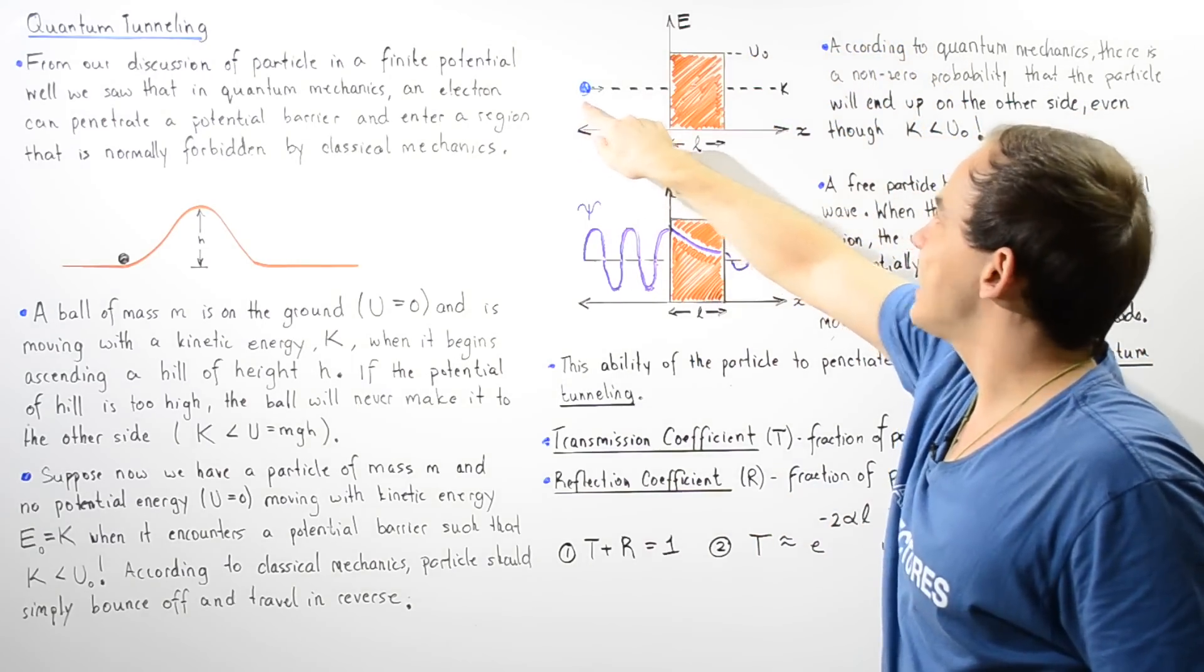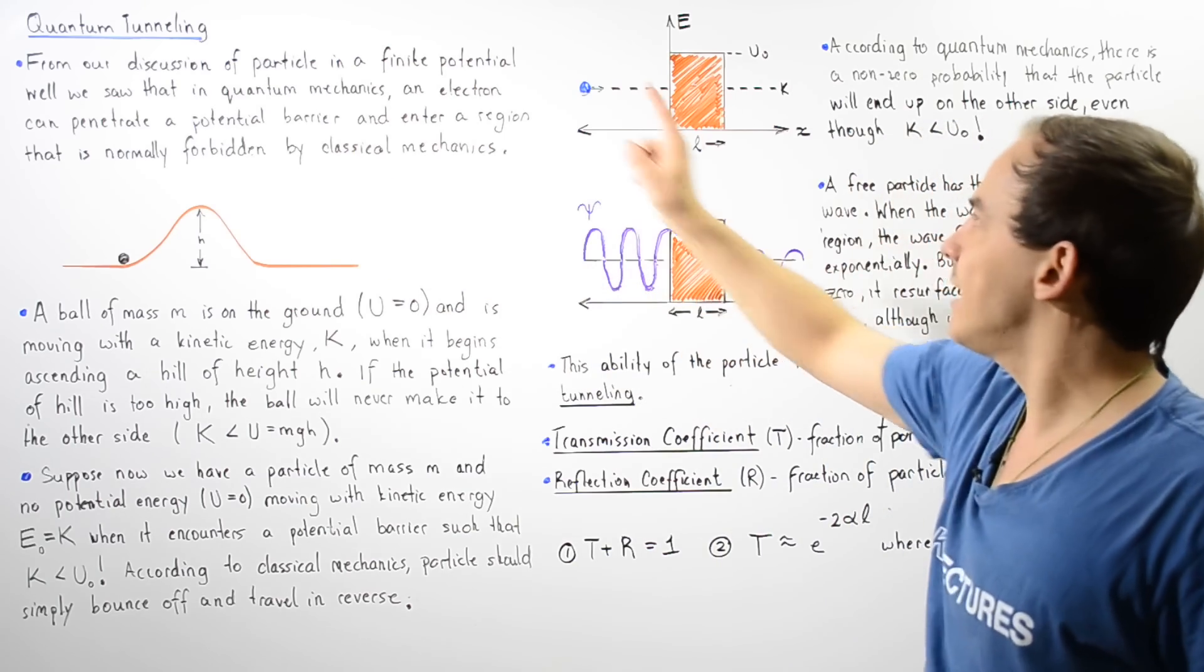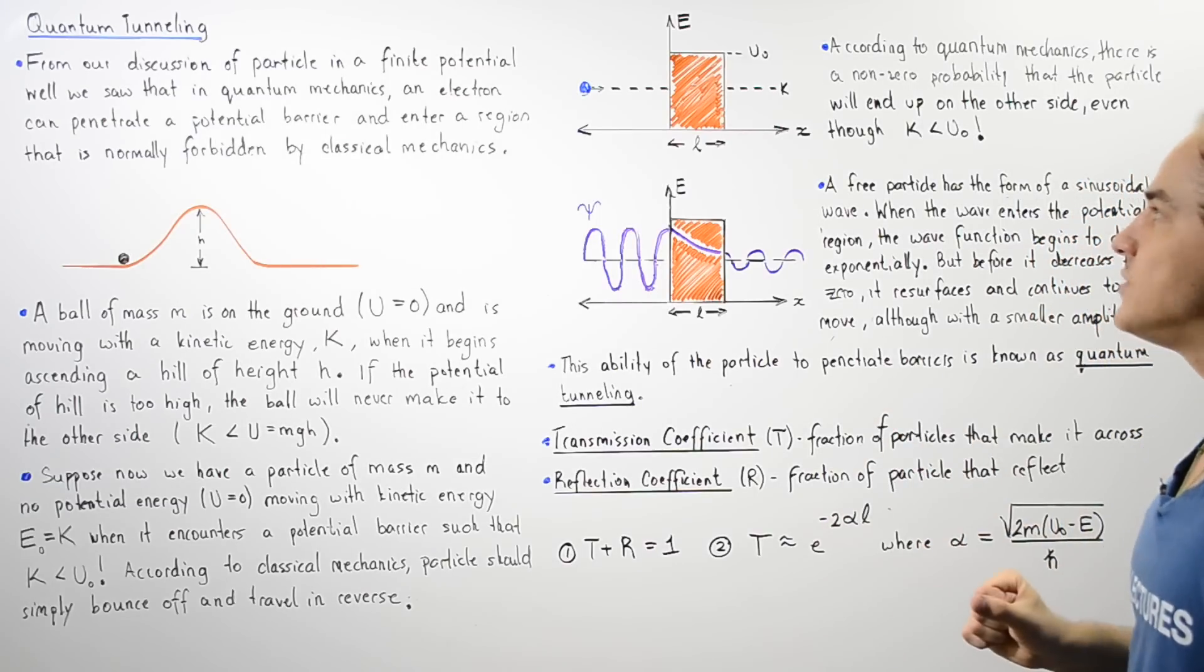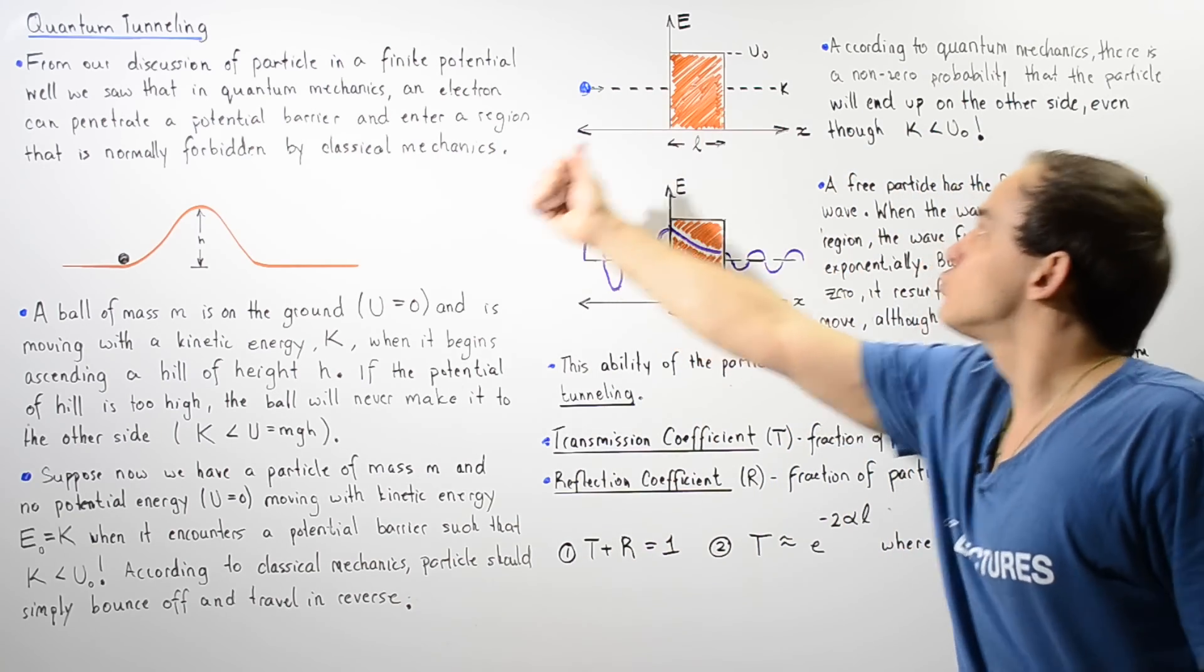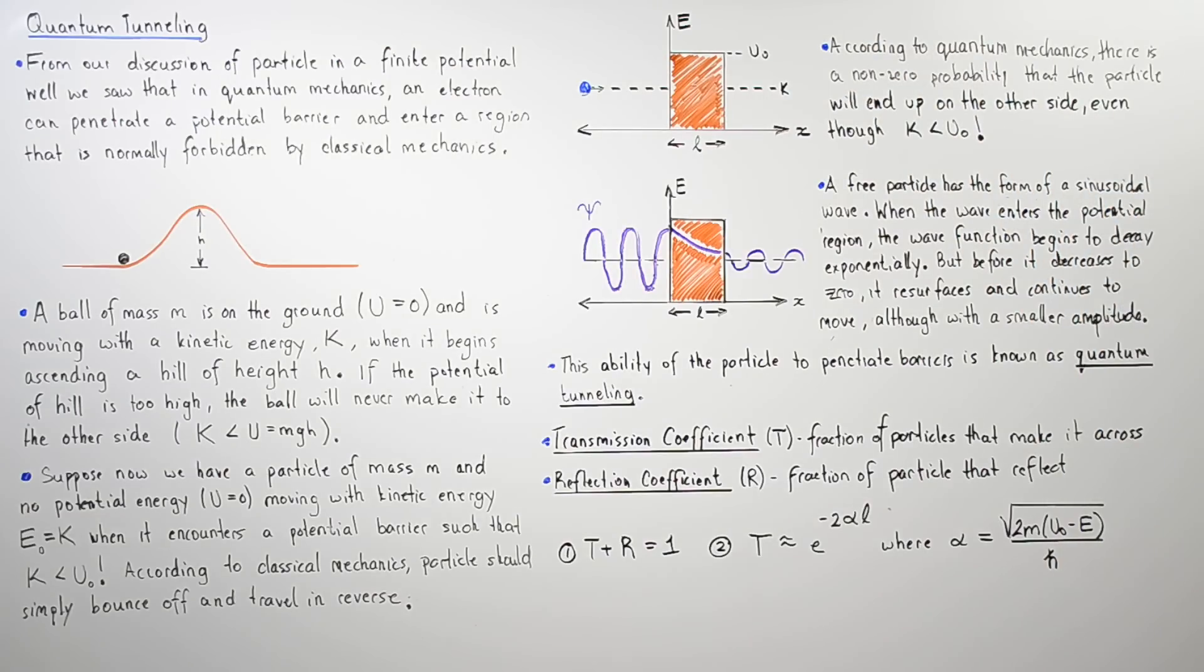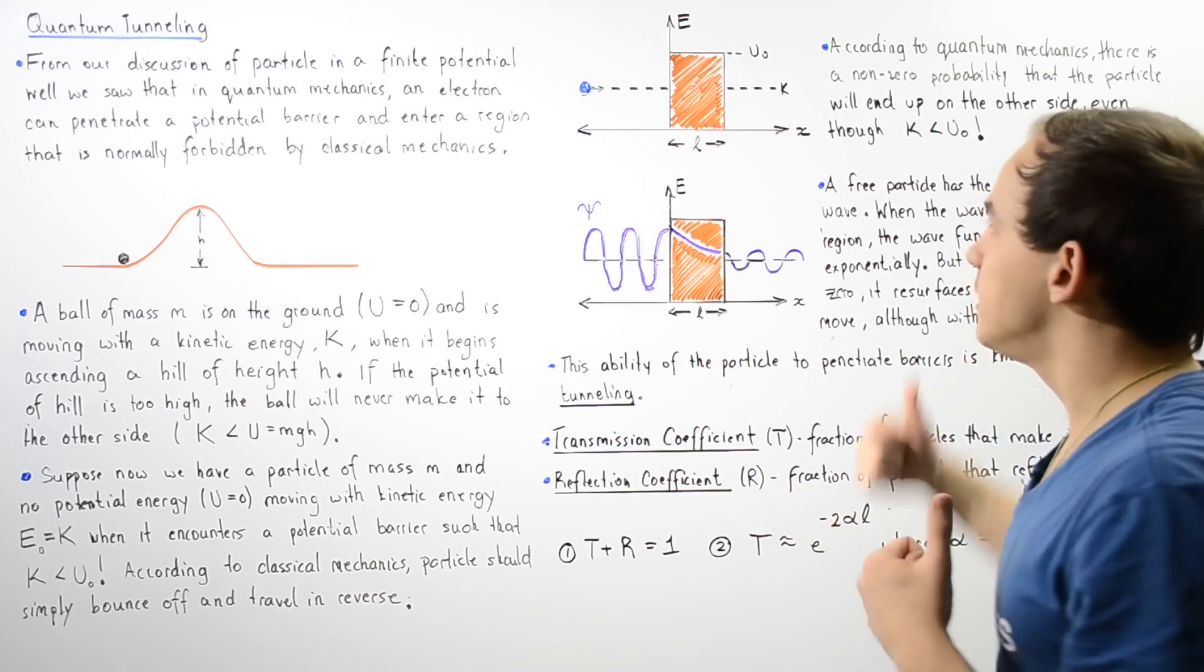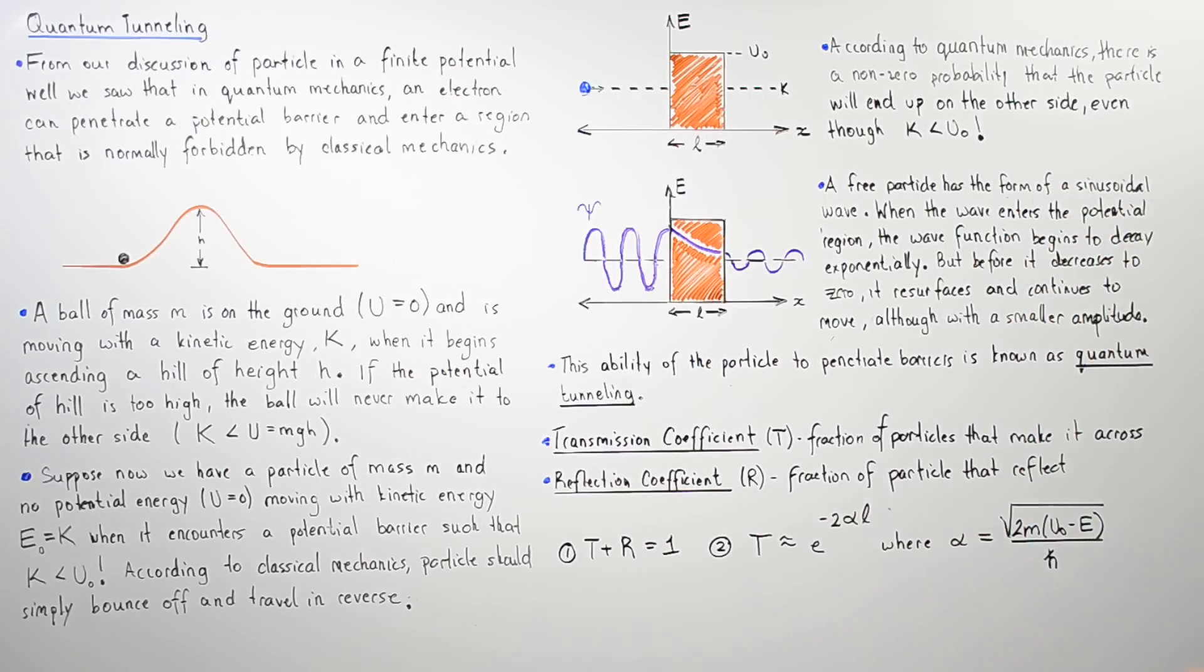So our potential energy U₀ is greater than the kinetic energy of that object. And as it travels, according to classical mechanics, it should basically bounce off and reverse directions and move in the opposite direction. But what actually happens is that particle has the probability of actually trespassing, actually moving across and ending up on the other side of that barrier. So we can think of this region as being a region where there is an electric field that basically repels this electron's motion.